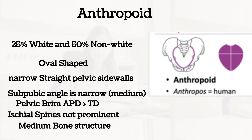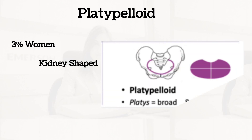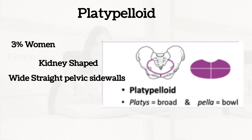Finally, the platypelloid pelvis is commonly found in about 3% of women. It is a flat female-type pelvis. The pelvic brim is kidney-shaped — shaped like a kidney. The side walls are straight and actually very wide.